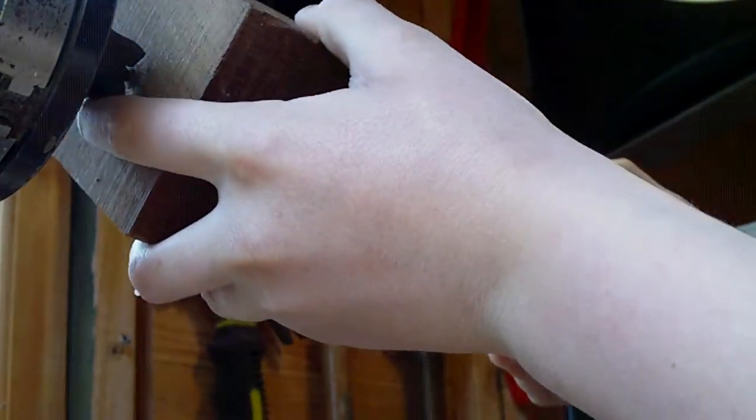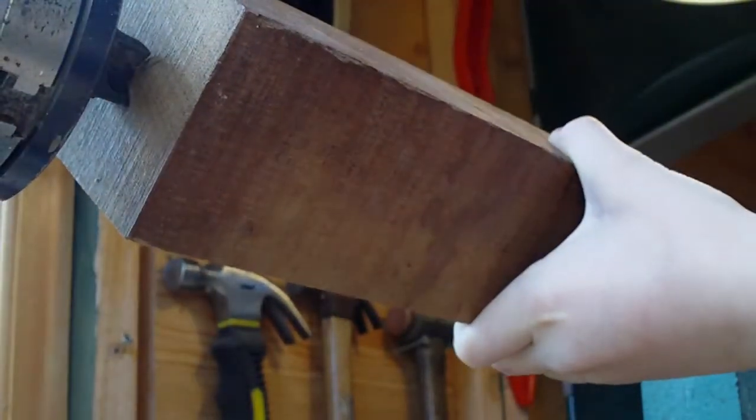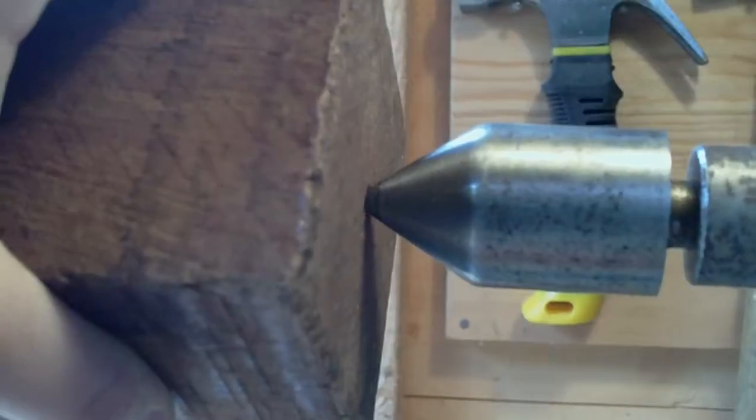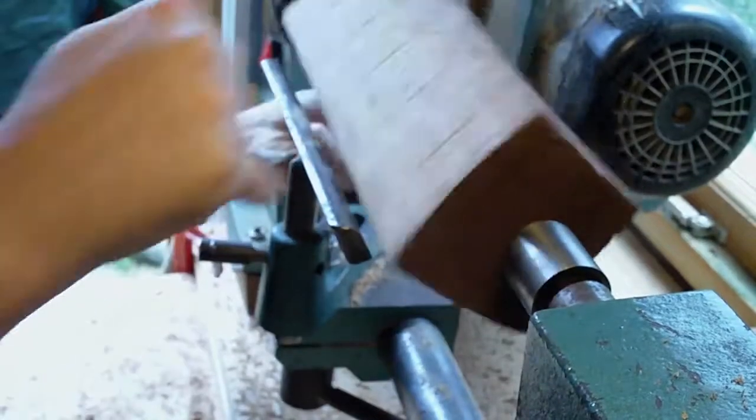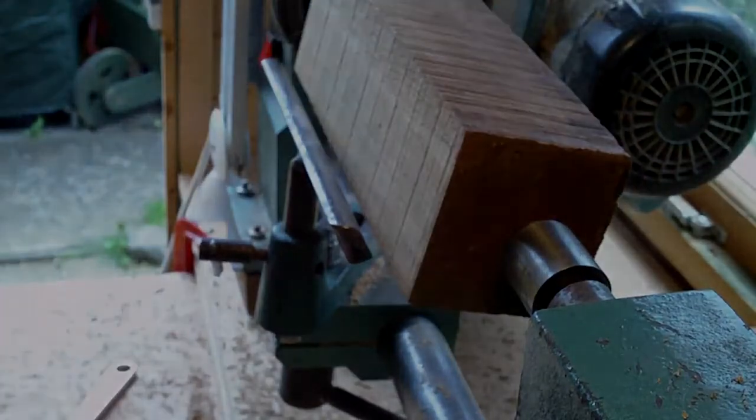As you can see here I'm mounting it between centres on my lathe. I've got a prong drive in the chuck to hold it in. Now I'm just tightening the tail stock up to hold it in firmly and now I'm going to mount the tool rest and start turning, roughing out with my roughing gouge.